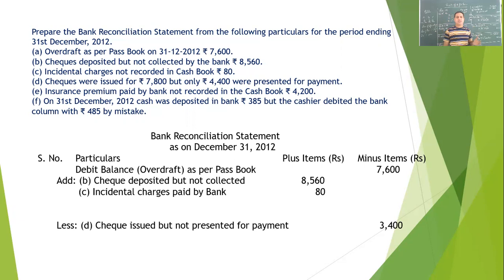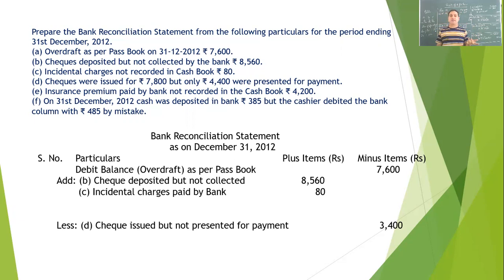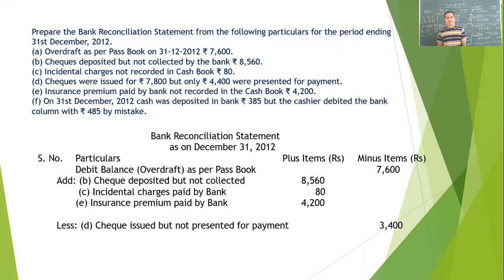Next, insurance premium paid by bank but not recorded in cashbook. The bank paid the insurance premium, so it is deducted from the bank account, but in the cashbook it is not deducted. Therefore, the balance of cashbook is higher than passbook, so we will add it to make passbook equal to cashbook — it goes to the plus side.